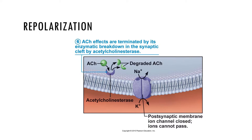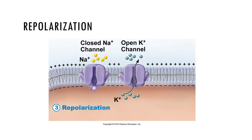Because more potassium ions eventually leave than is necessary, the membrane can become hyperpolarized. The sodium-potassium pump restores ion concentration in the hyperpolarized membrane to reach the resting membrane potential. For each ATP used, three sodium ions are pumped out and two potassium ions are pumped back in. You will learn more about the sodium-potassium pump and the steps in an action potential in more detail in Chapter 12 when you cover the nervous system.